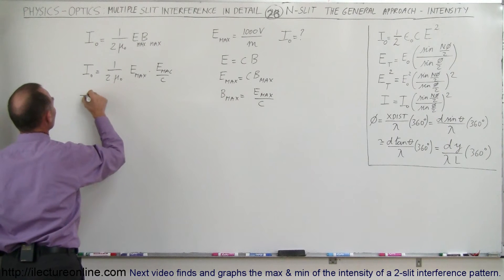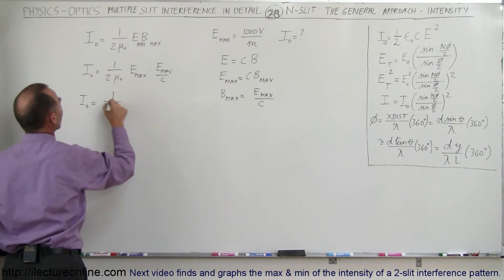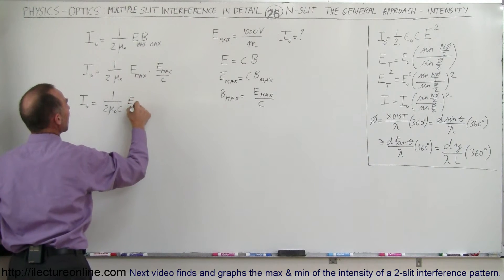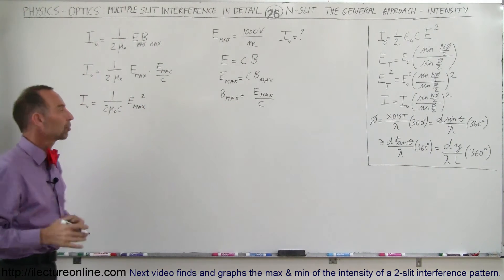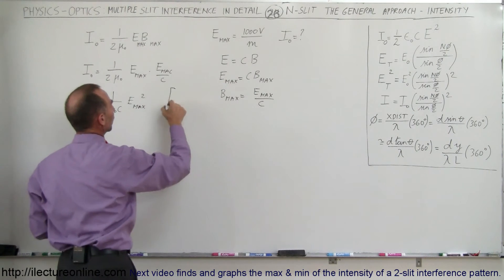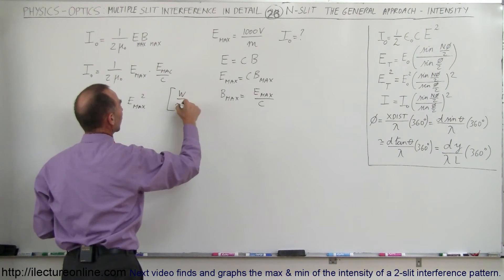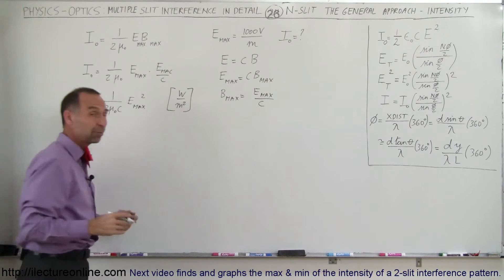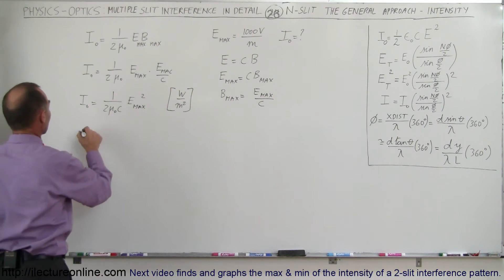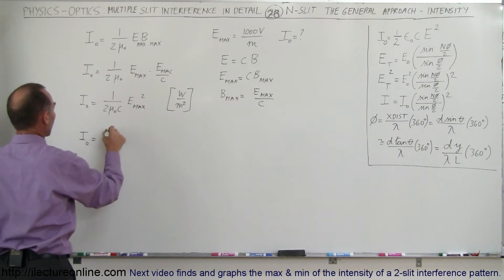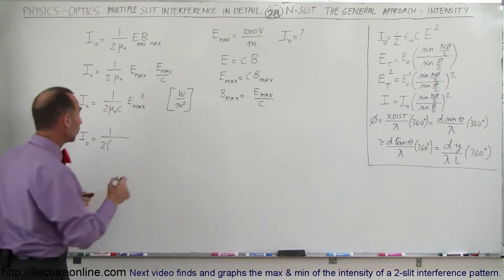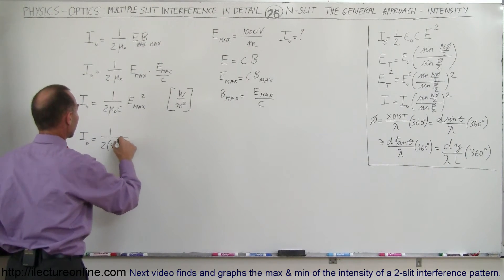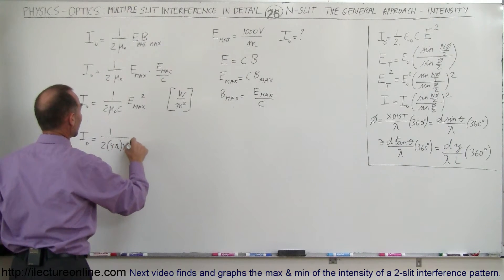Or I sub nought is equal to 1 over 2 mu sub nought times C times E max squared. And of course the units of that will be in watts per square meter. So we know that we're looking for units of watts per square meter. So let's plug in all the numbers and see what we get. So therefore I sub nought is equal to 1 divided by 2 times mu is the permeability of free space, which is equal to 4 pi times 10 to the minus 7.